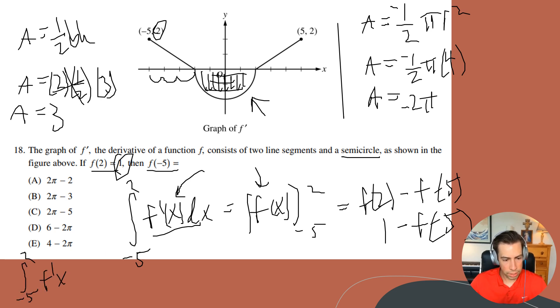So therefore, the integral from negative five to two of f prime of x dx is also equal to three minus two π. Now, if it's equal to three minus two π but it's also equal to this expression right here, then I can just go ahead and set those two values equal to each other. So let me go ahead and clear some space.